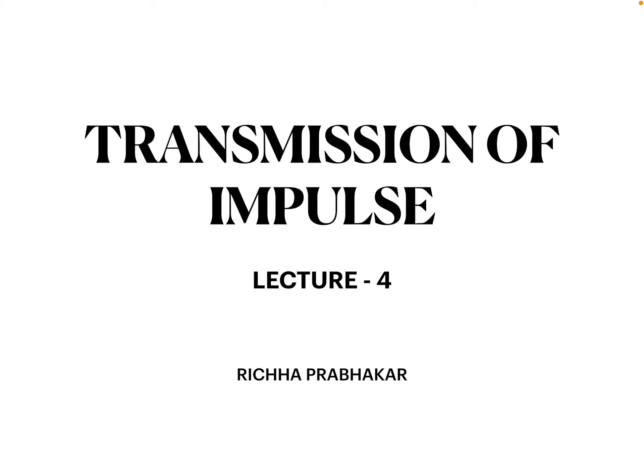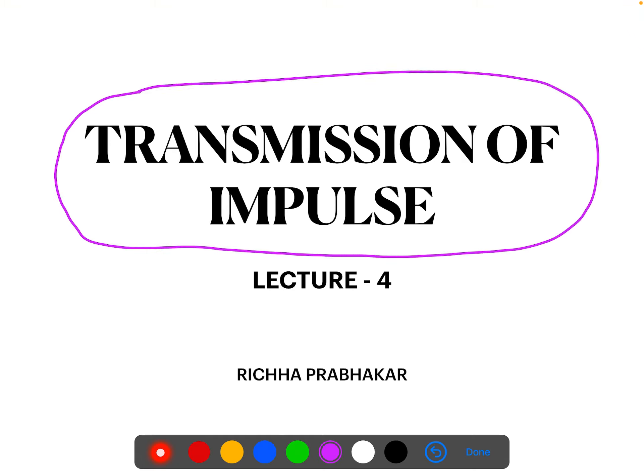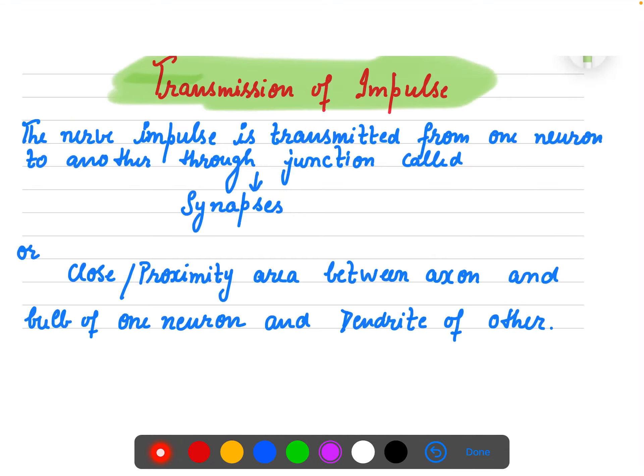Good morning class 11 students. New week, new topics. We are on the chapter Neural Control and Coordination, and today is lecture 4. We have talked about generation of electric impulse and conduction of nerve impulse. Today we will discuss how the impulse is transferred from one neuron to another, which you may have studied in class 10th, but here we will discuss it in detail.